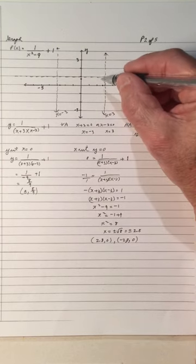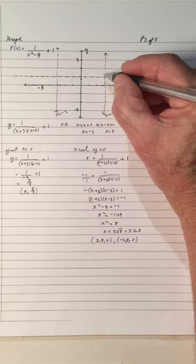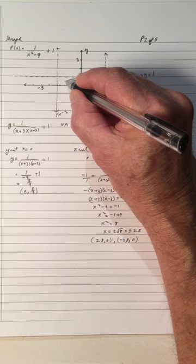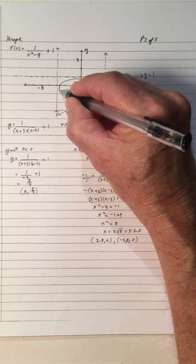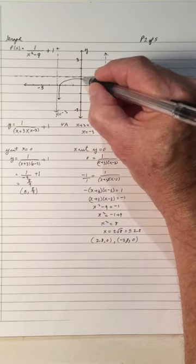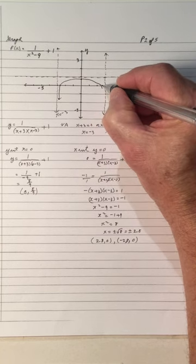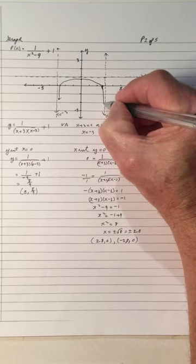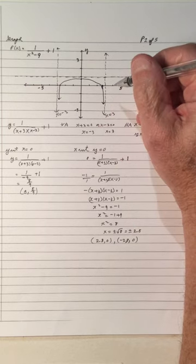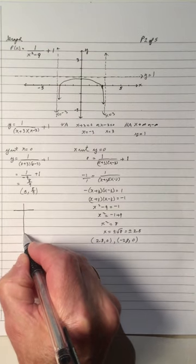We have the two vertical asymptotes here. It looks like the graph is doing this — coming over here, going down like this. But it goes through that point there. So we need to find a couple more points to determine where exactly the graph lies.